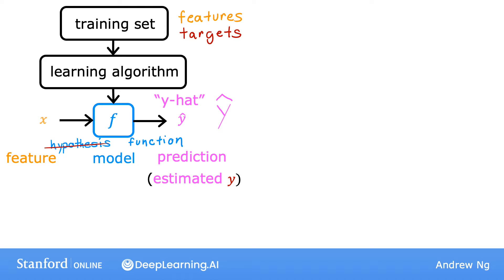The model's prediction is the estimated value of y. When the symbol is just the letter y, then that refers to the target, which is the actual true value in the training set. In contrast, y-hat is an estimate. It may or may not be the actual true value.